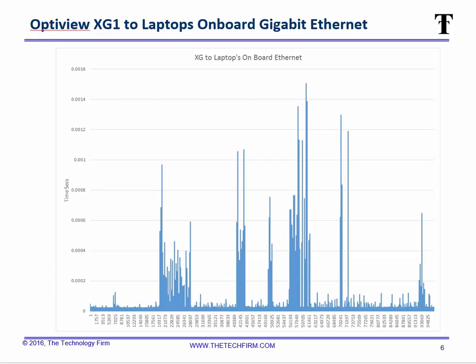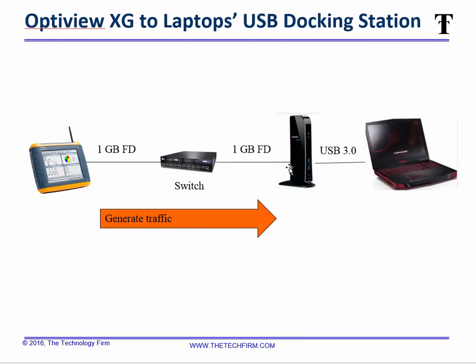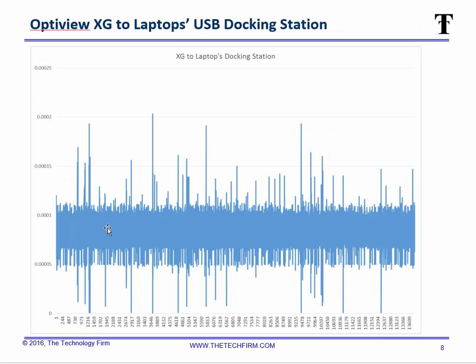The second thing I did was take my USB docking station and use that to capture packets. This also gives you the same impression as using a USB-to-Ethernet adapter, which I see a lot of people using out there. We generate a bunch of packets and again, it's all over the map — ranging from around 10 microseconds to 5 microseconds variance — basically you can see that's just not like the first chart. I'll show you some numbers at the end.